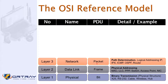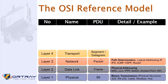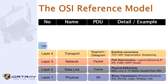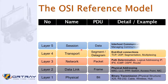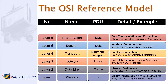Layer four is the transport layer — we call the data unit a segment, and it handles end-to-end connection. Layer five is the session layer, which establishes sessions between source and destination — it is the inter-host communication layer. Layer six is the presentation layer, which handles data presentation and encryption. Layer seven is the application layer, where the user is interacting — this is network host-to-host communication.